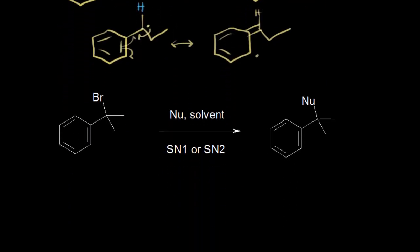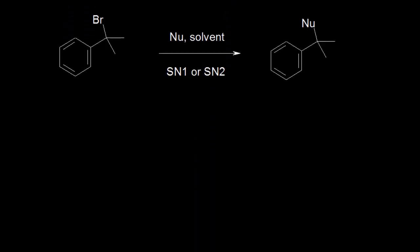Let's look at another type of reaction: substitution at a benzylic halide. With a bromine at the benzylic position, if you add a nucleophile and a solvent, the mechanism could be either SN1 or SN2 depending on the classification of your alkyl halide and what solvent you use. The end result is your nucleophile substituting in for your halogen at the benzylic position.